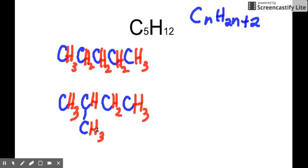So this is an acceptable isomer of C5H12, because it still is C5H12 with one branch. So when we name this, this is 2-methylbutane.